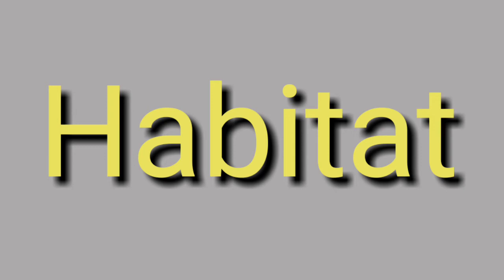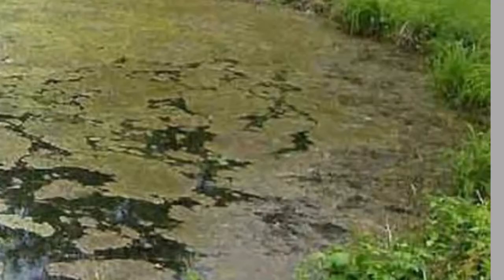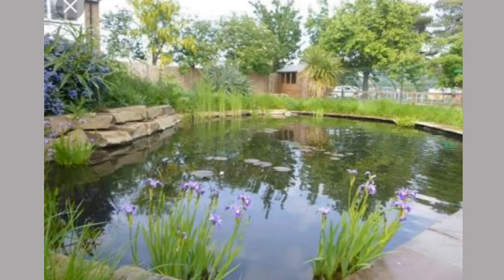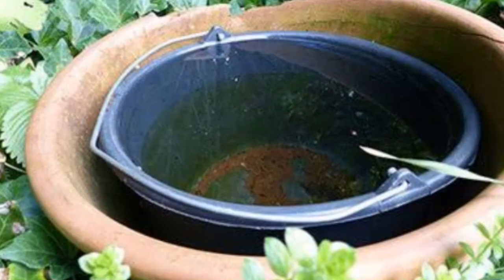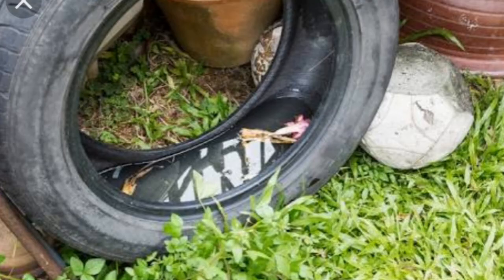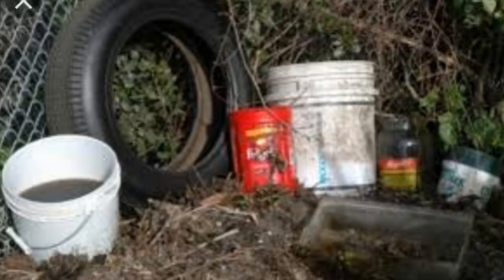Now let's see the habitat. Habitat means a natural environment where a living organism lives. Mosquitoes breed in soft moist soil or stagnant water sources such as drains, ponds, old tires, flower pots, bird pools, etc.